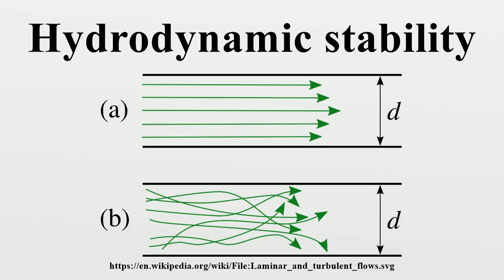But when an infinitely small variation in the present state may bring about a finite difference in the state of the system in a finite time, the system is said to be unstable.